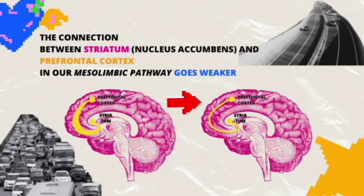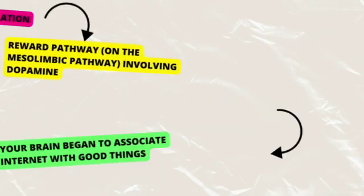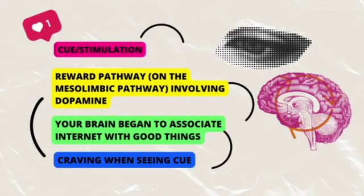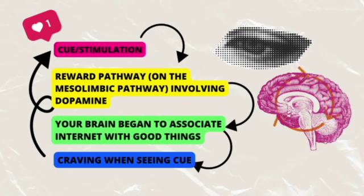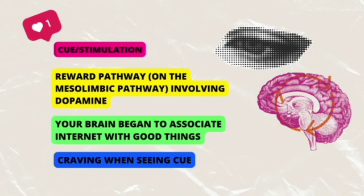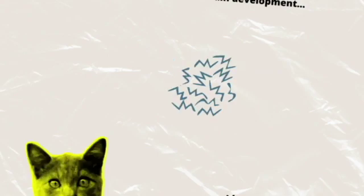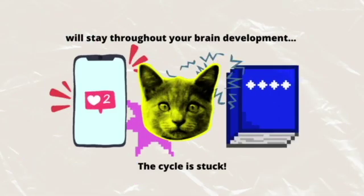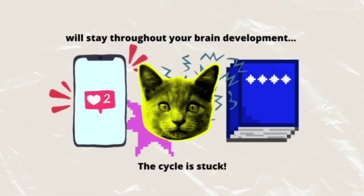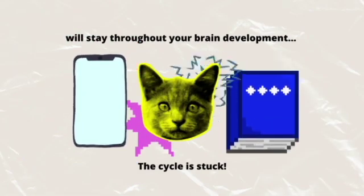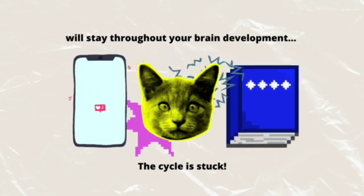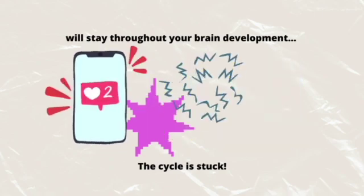Picking up the phone is an easy task — you don't need any cognitive function to do it, making it a very easy source of dopamine that you can access continuously. You see the red dot, think it's rewarding, which is signaled by dopamine, and crave it. Since the pathway has turned into a highway, it stays throughout your brain development, and the cycle becomes stuck.